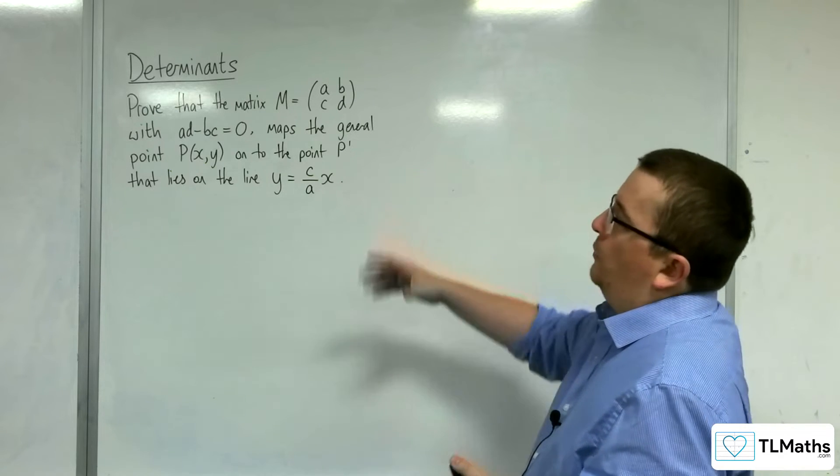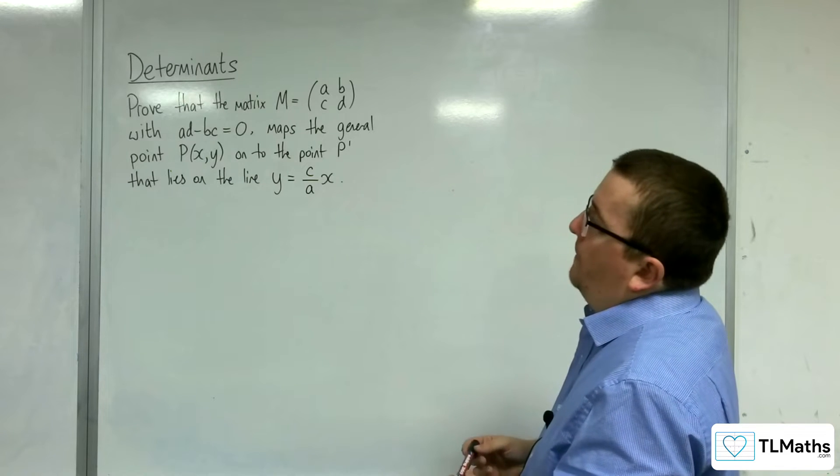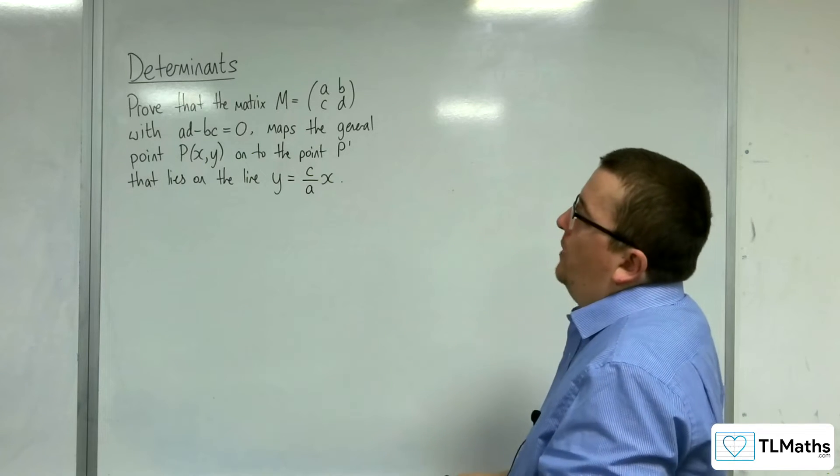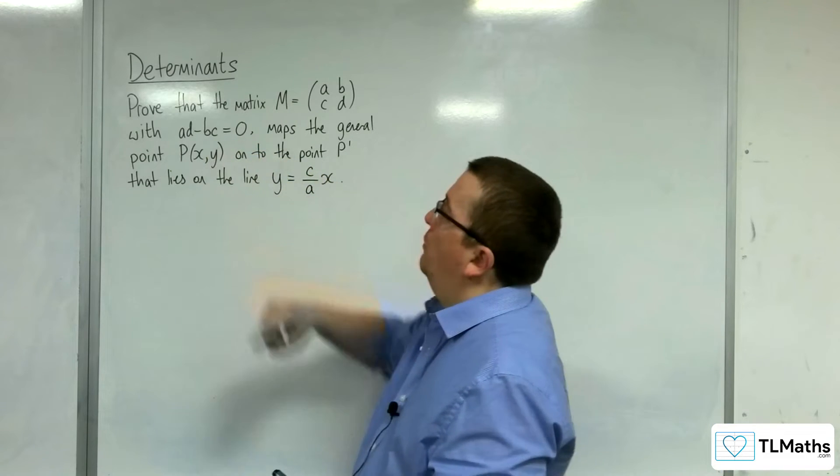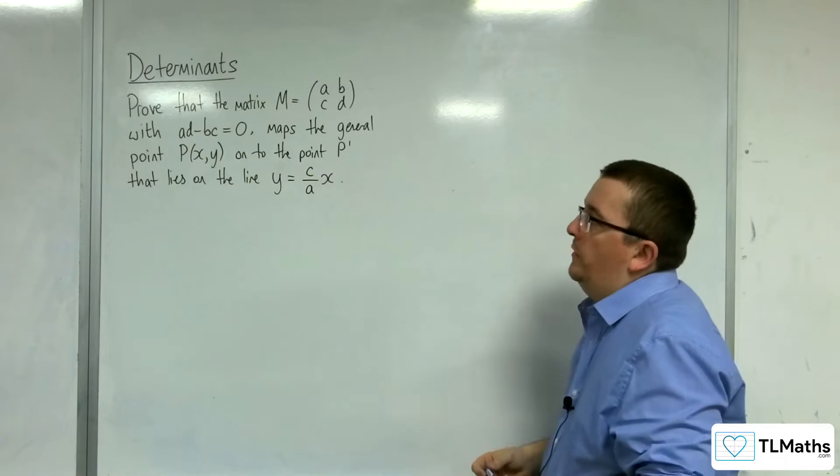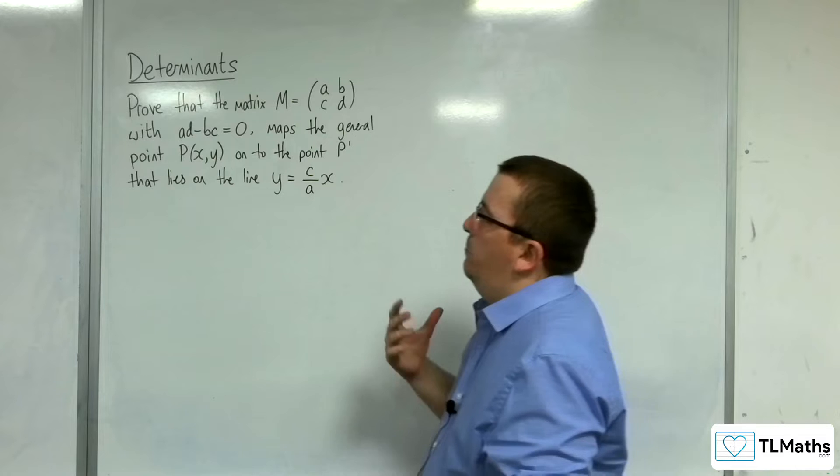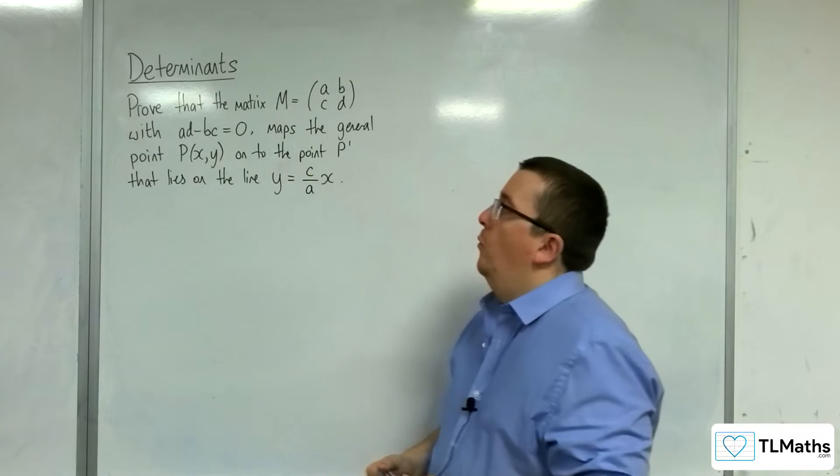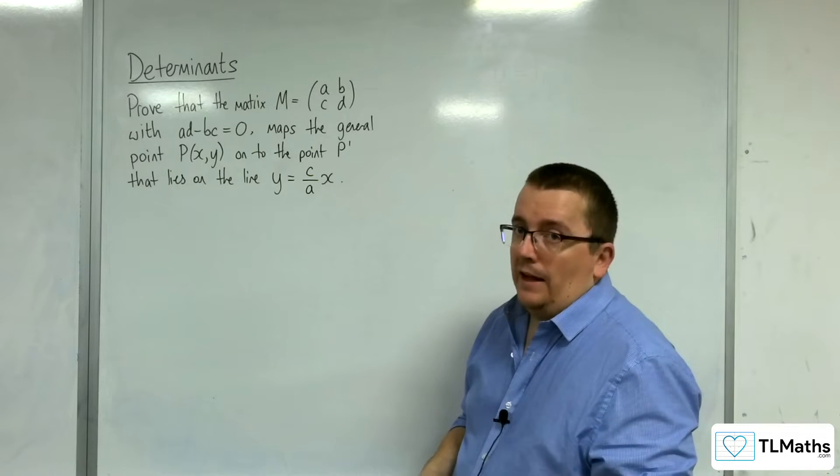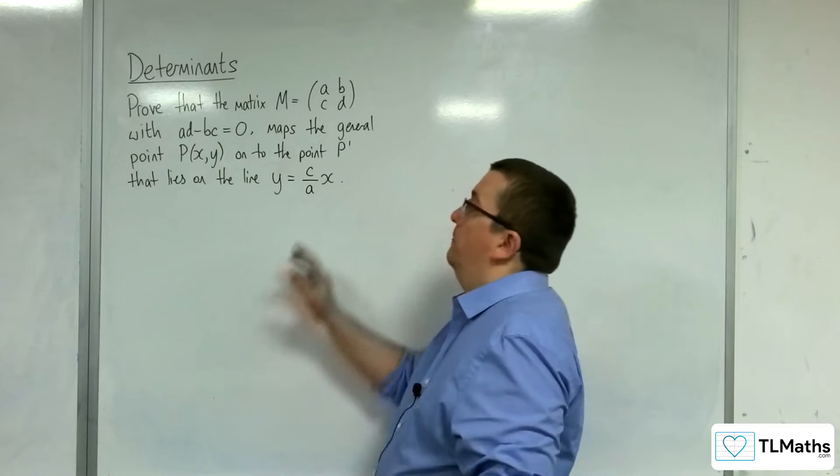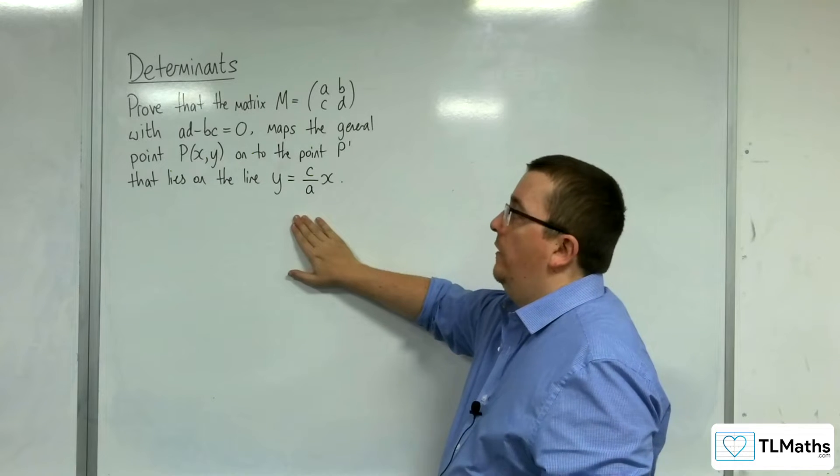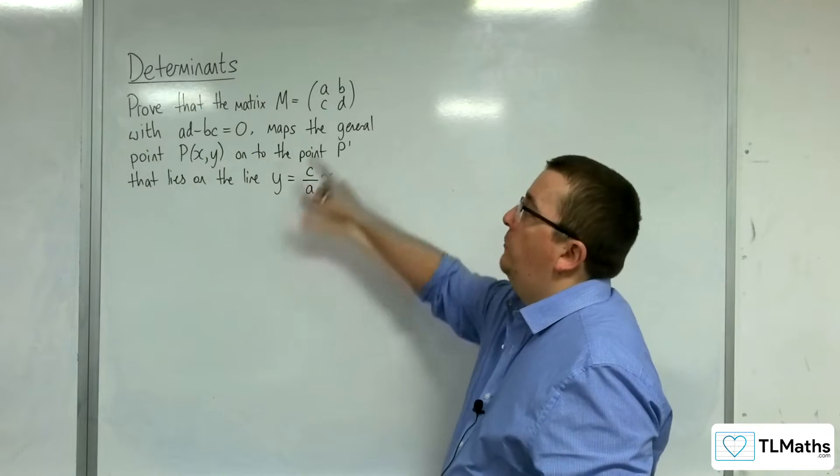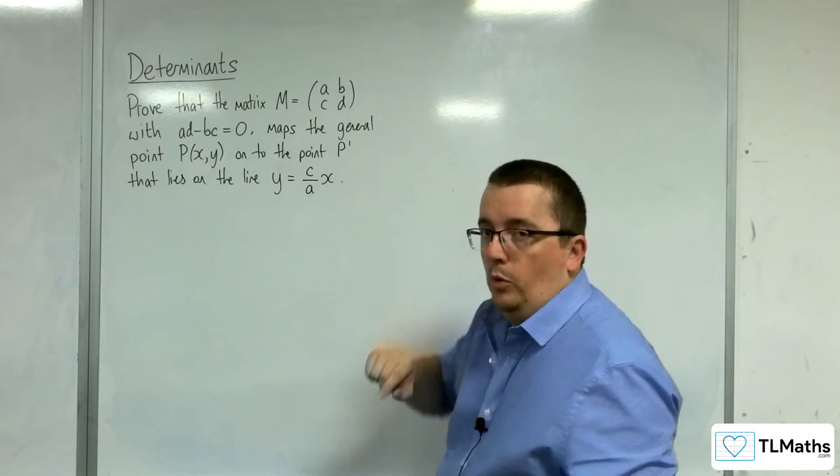So now, we're going to prove that the matrix M equals (a b; c d) with the determinant being 0, maps the general point P onto the point P' that lies on the line y equals c over a x. So we're trying to prove that that is the equation of the line that this matrix maps any point onto.